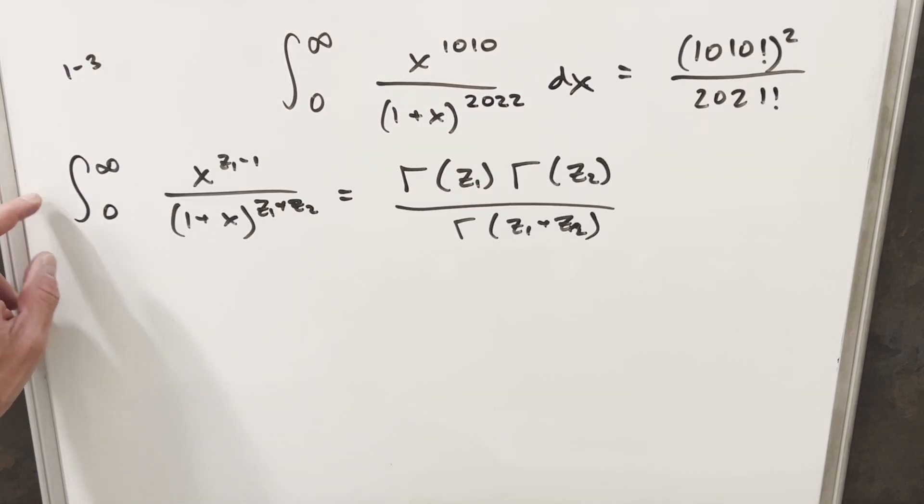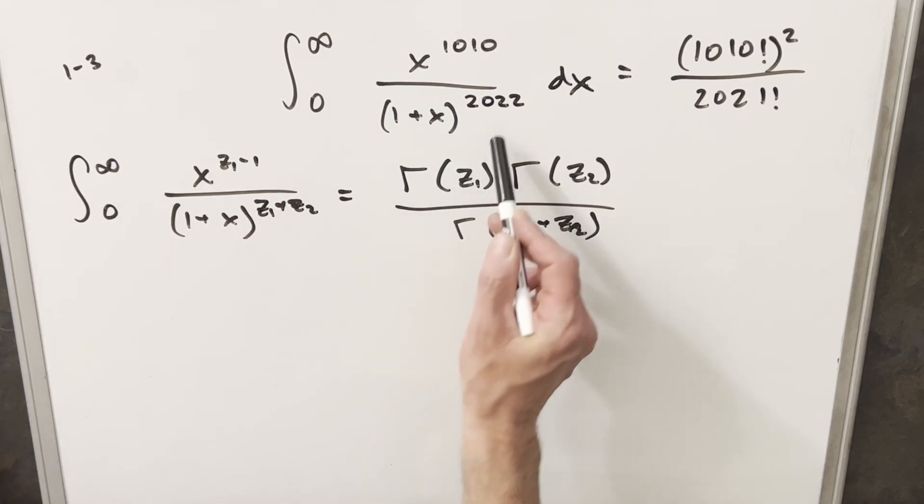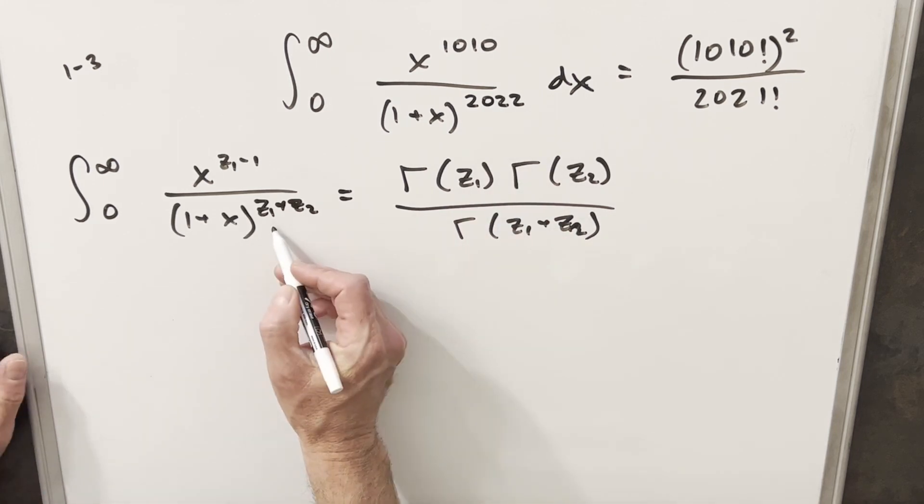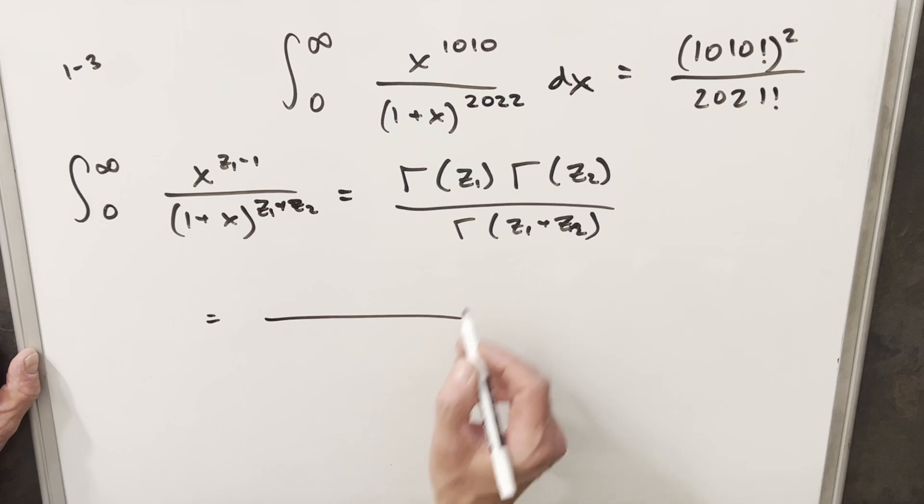Okay, so we have this formula for the beta function up here, over here towards the left. And you'll notice this isn't exactly the right form, right? We're going from zero to infinity, same bounds, we got one plus x here with an exponent. And like I said, this would go really quick because for z1 plus z2, we have that value right here. So z1 plus z2 is going to be 2022. So we could go to this answer right away.